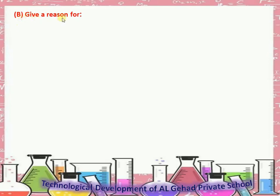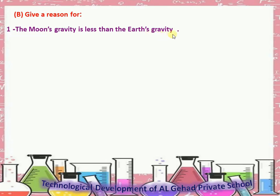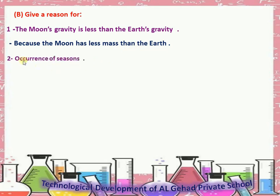Give a reason for. Number 1: The moon's gravity is less than the earth's gravity. Because the moon has less mass than the earth. Number 2: The occurrence of seasons. Due to the revolution of the earth around the sun.